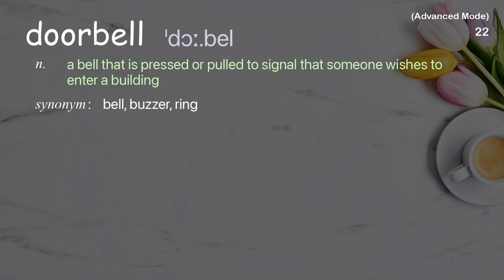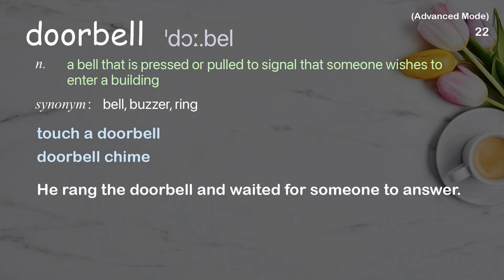Doorbell: a bell that is pressed or pulled to signal that someone wishes to enter a building. Examples: touch a doorbell, doorbell chime. He rang the doorbell and waited for someone to answer.